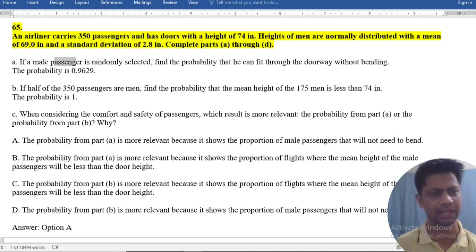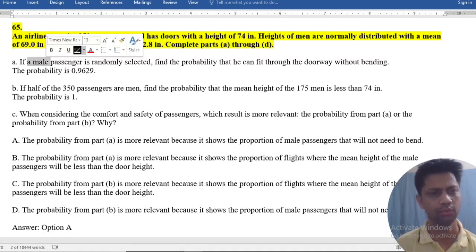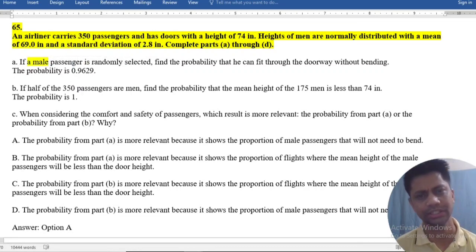Part A: If a male passenger is randomly selected, find the probability that he can fit through the doorway without bending.